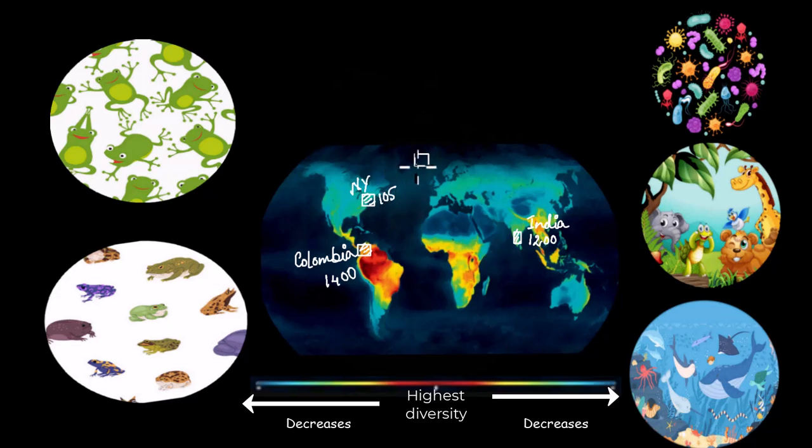And moving further towards poles, let's talk about Greenland. We have Greenland here. Poor Greenland only has 56 different species of birds. So you just saw we moved from tropics to poles and the species diversity decreased.